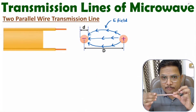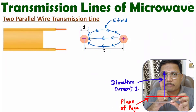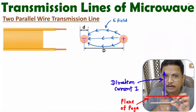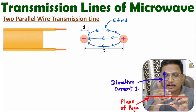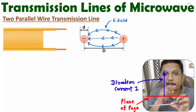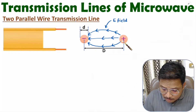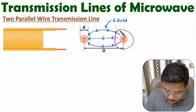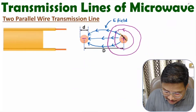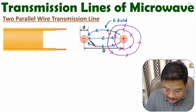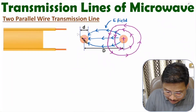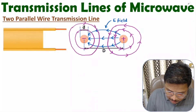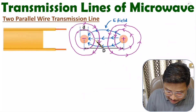If this is the plane of the page and current is coming out, then place your thumb in the direction of current and your fingers indicate the direction of the magnetic field. So, if current is coming out of the page, the magnetic field rotates in this direction. And here where current is going inside the page, the magnetic field rotates in the opposite direction as per the right-hand thumb rule.